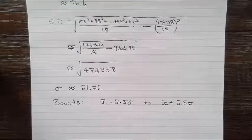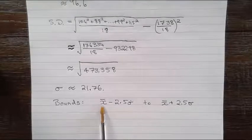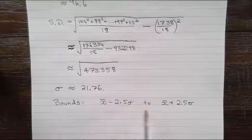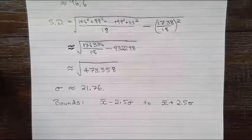Now remember that our procedure for finding the outliers tells us that we need to look outside of some bounds. The bounds are given by the mean, or the average x̄, minus 2.5 standard deviations or σ, all the way up to x̄ plus 2.5 standard deviations, or σ.